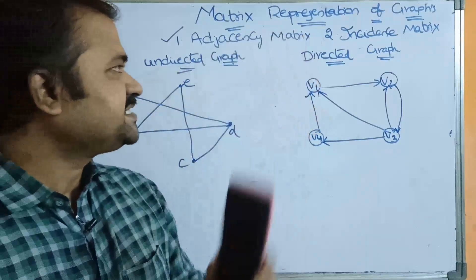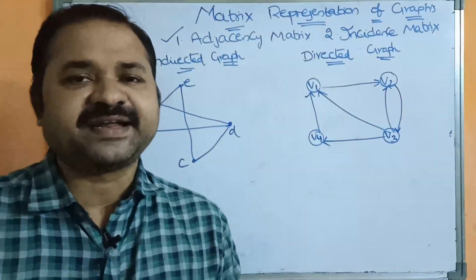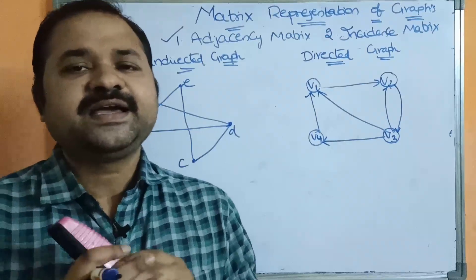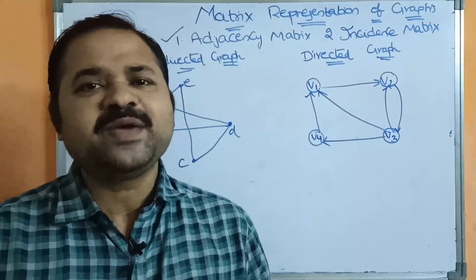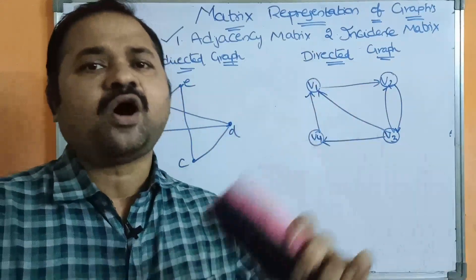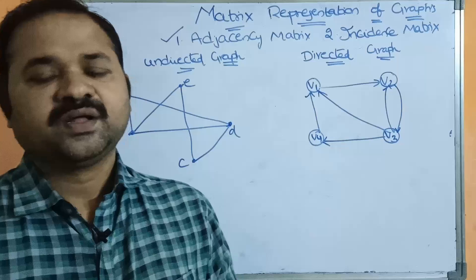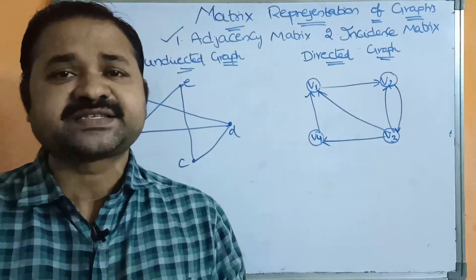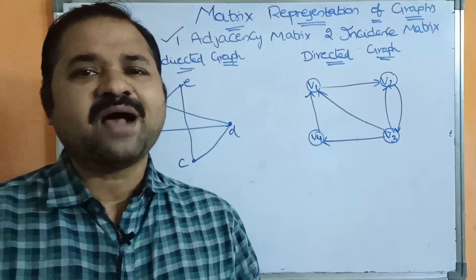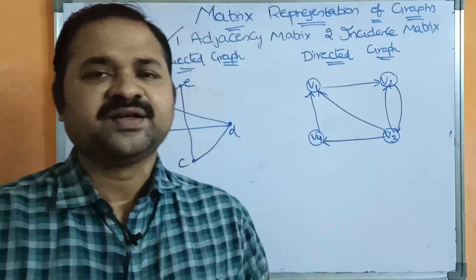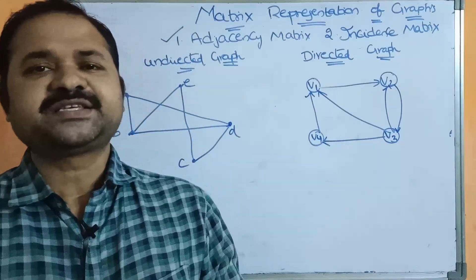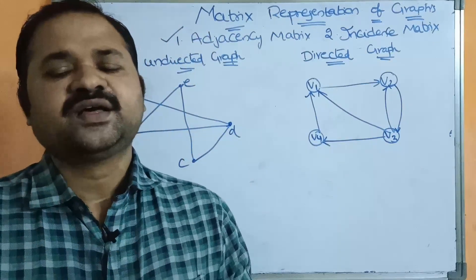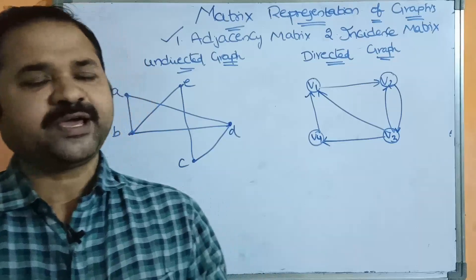First, let us see about adjacency matrix. Adjacency matrix means the value may be either 1 or 0. If there is an edge between two vertices, then we have to fill the value as 1. Whereas if there is no edge between two vertices, then the value will become 0.